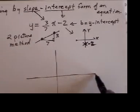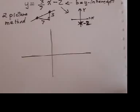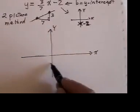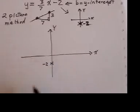So, now all I do to graph my line is I put in my x and y axis. I go down here to negative 2. There's my starting point. That's picture 2.